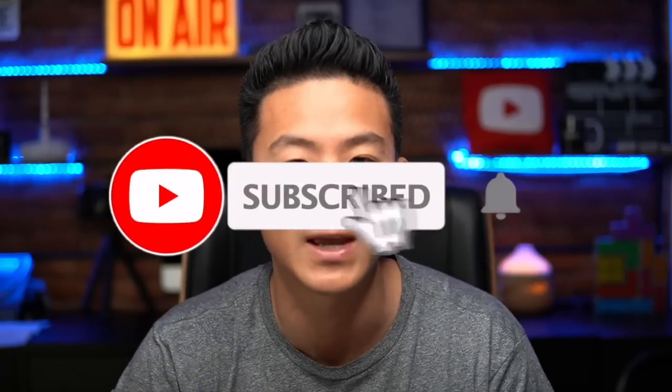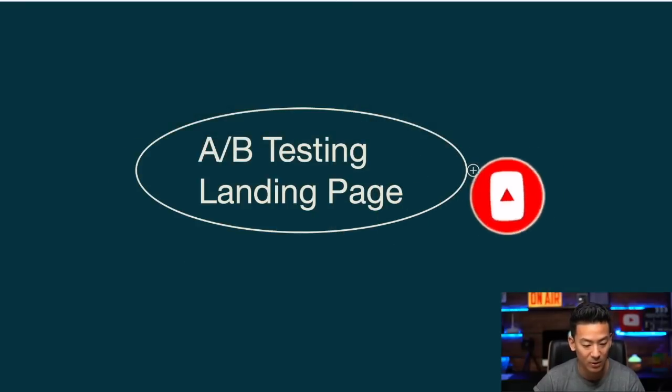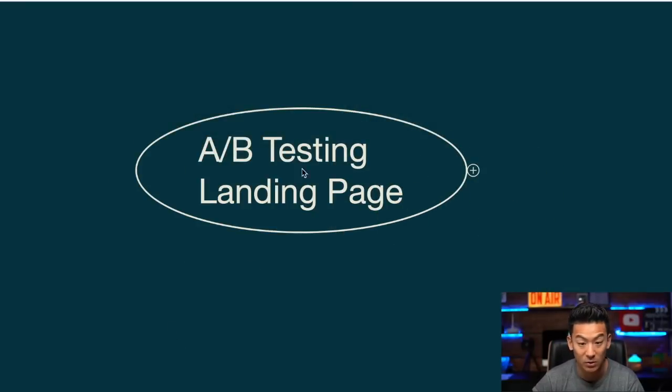Hey, what's going on? Aaron Chen. I hope you are doing well. If you're watching this video right now, you're probably trying to figure out how to do an A-B split test. So you want to split test two landing pages and figure out exactly how to do it. I'm going to show you exactly how to do that in this video. If this is the first time you're watching one of my videos, I always come up with content that will teach you how to become more profitable with internet marketing, so consider subscribing to the channel and hit that bell notification.